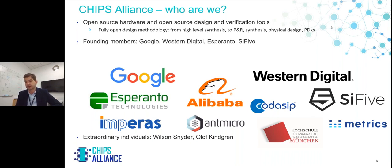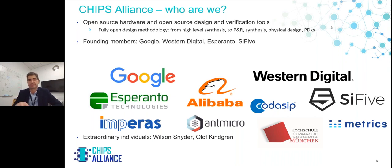There is an opportunity for companies to explore and develop what we've been openly calling a Red Hat model for open source hardware — offering open source IP support, maintenance, and design verification services. This is interesting both for IP cores and software tools. Many things that are open source are not free and require continuous effort to maintain and improve, creating opportunities for new business models. Open source IP can also significantly help reduce export barriers, collaboration barriers, and early customer engagement and evaluation barriers.